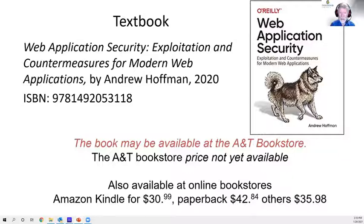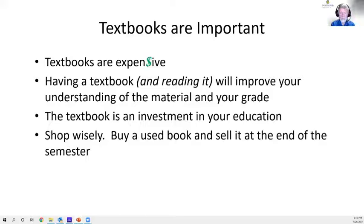Since this book is relatively recent, there aren't a lot of used copies. This is different from the textbook used last year, which was 20 years old and out of print — for a computer textbook, something more recent makes sense. At around $30–42, it's actually on the cheap side. A calculus textbook at A&T usually runs about $200. For an online class, reading really helps you understand the material.